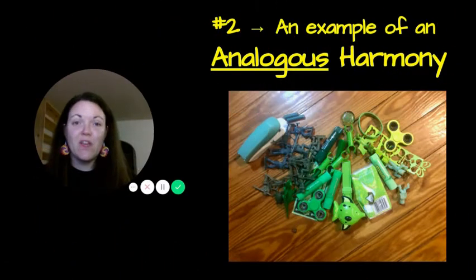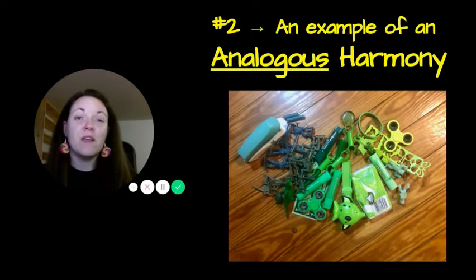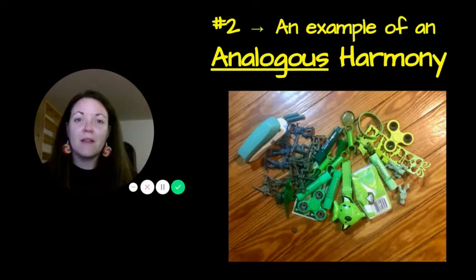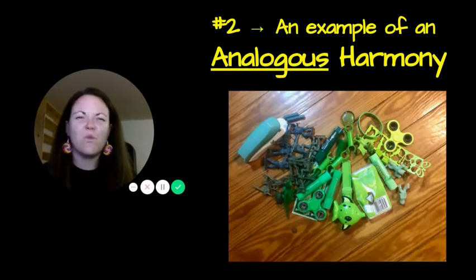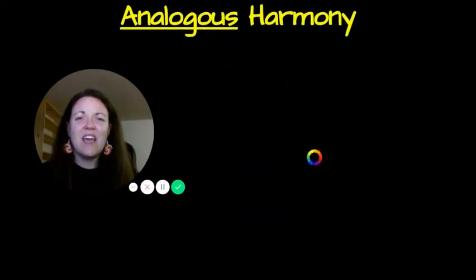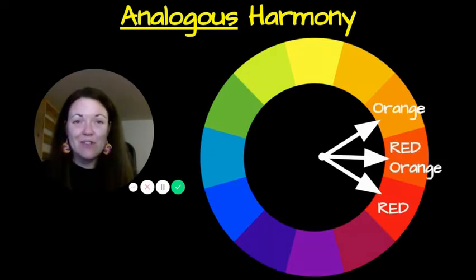Number two is an example of an analogous harmony. We talked about three harmonies in the video and we're going to focus on two of them today. If you look at the picture, we have three colors that are pretty similar — green, blue-green, and yellow-green — but they all have a commonality: they all have green. Analogous colors are any three colors that are next to each other on the color wheel, for example red, red-orange, and orange. You can pick any three colors you want.